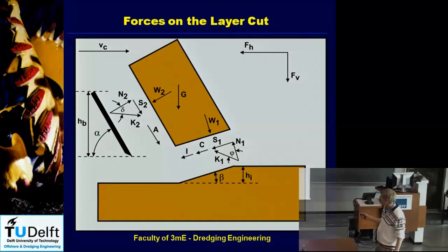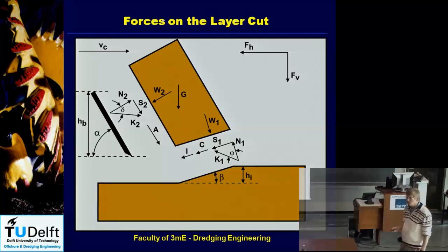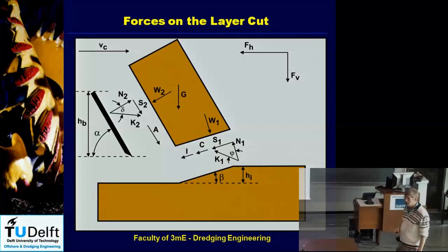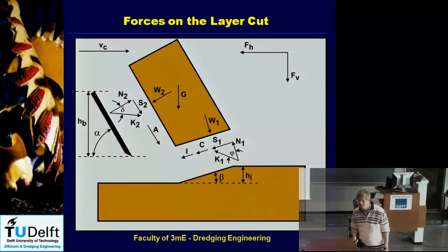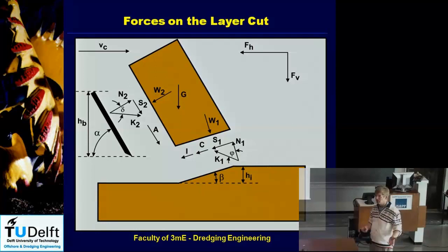We have the normal force and the shear force, and together they form the force K2. Between N1 and S1 we had the internal friction angle, phi, and between N2 and S2 we have the external friction angle, which we call delta. In both cases, if you take the tangent of the angle, you get the friction coefficient. So you have an internal friction coefficient and an external friction coefficient.